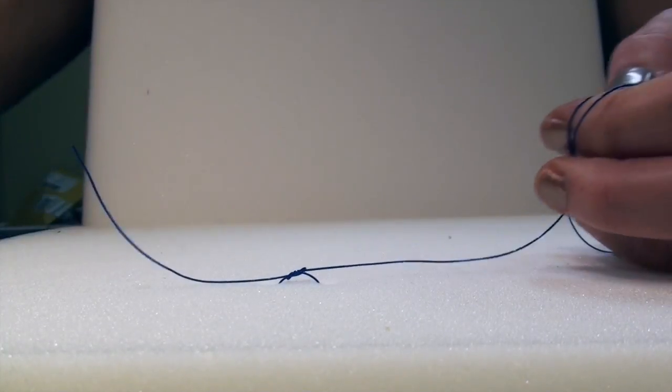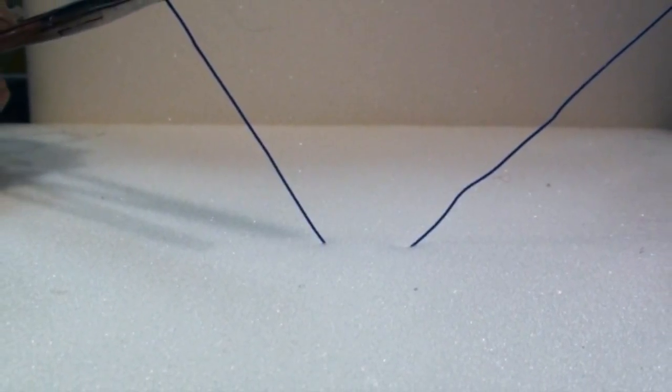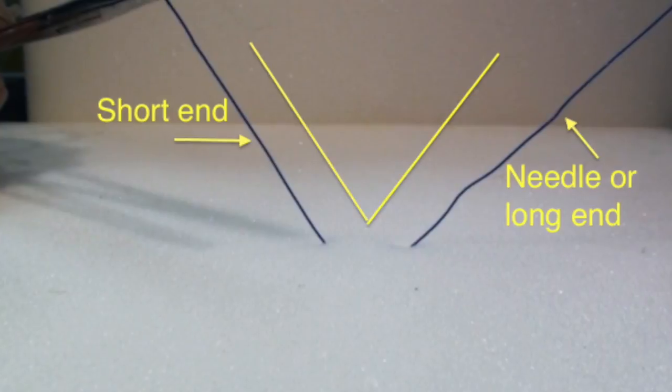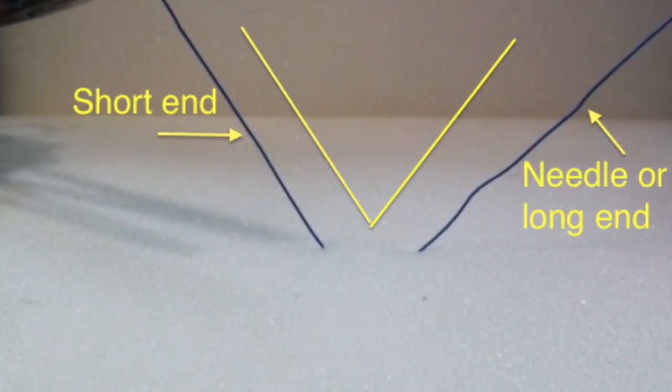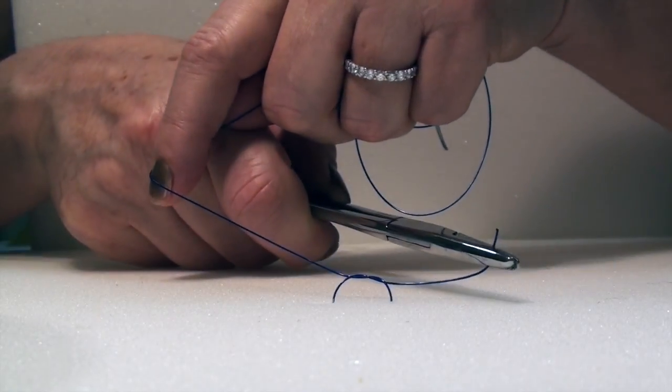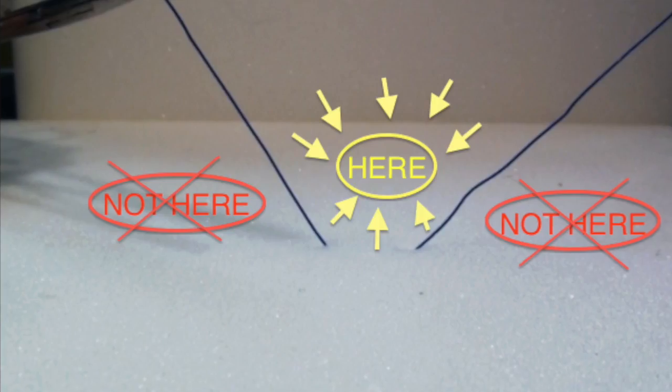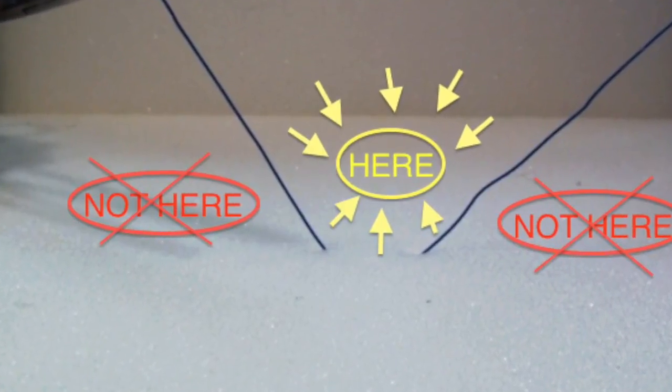The starting point with creating any good knot is where to place your needle driver. The short and long ends of your suture material create a V. Your needle driver always goes in the center of the V when creating a throw, always between your short and long end. Never start with your needle driver on the outside of either ends.